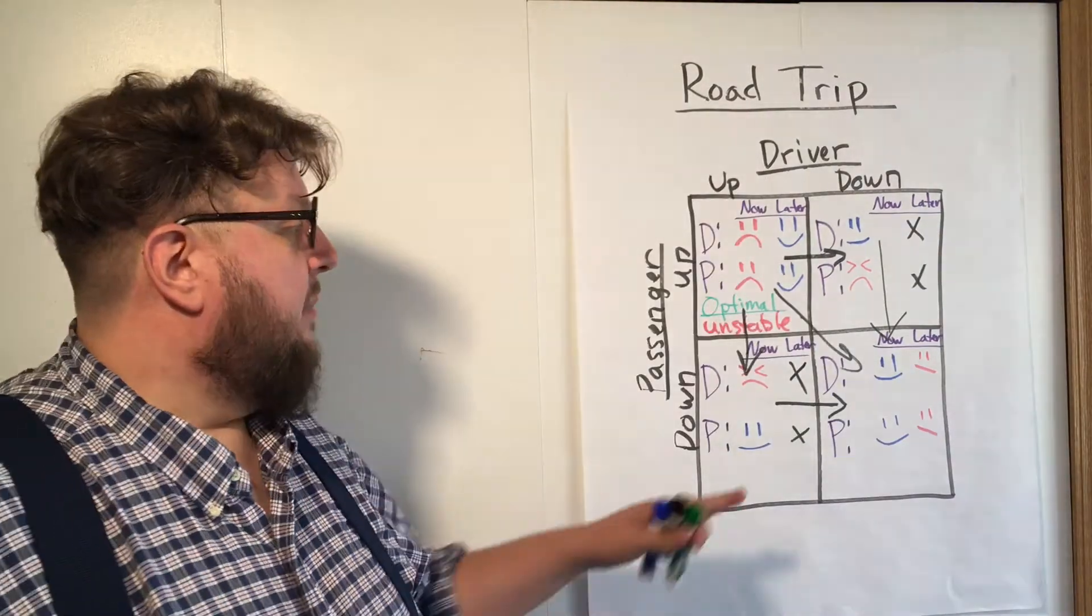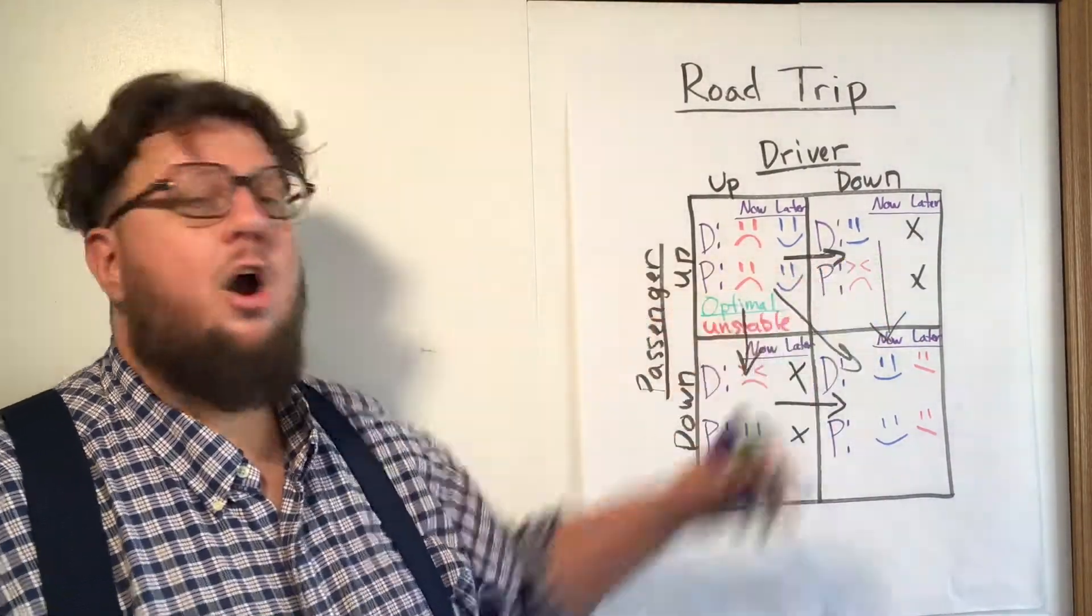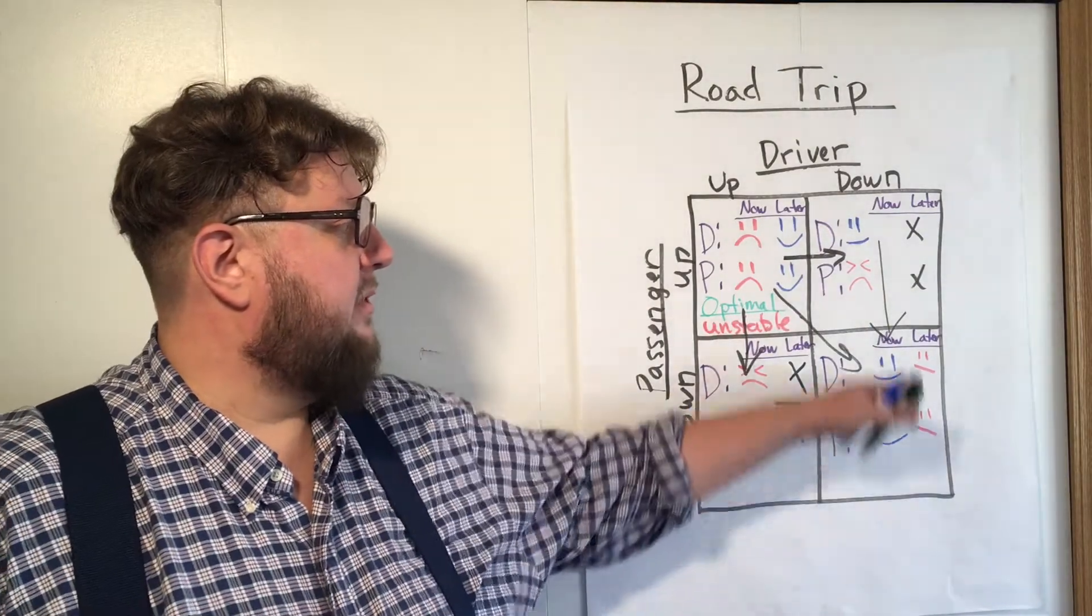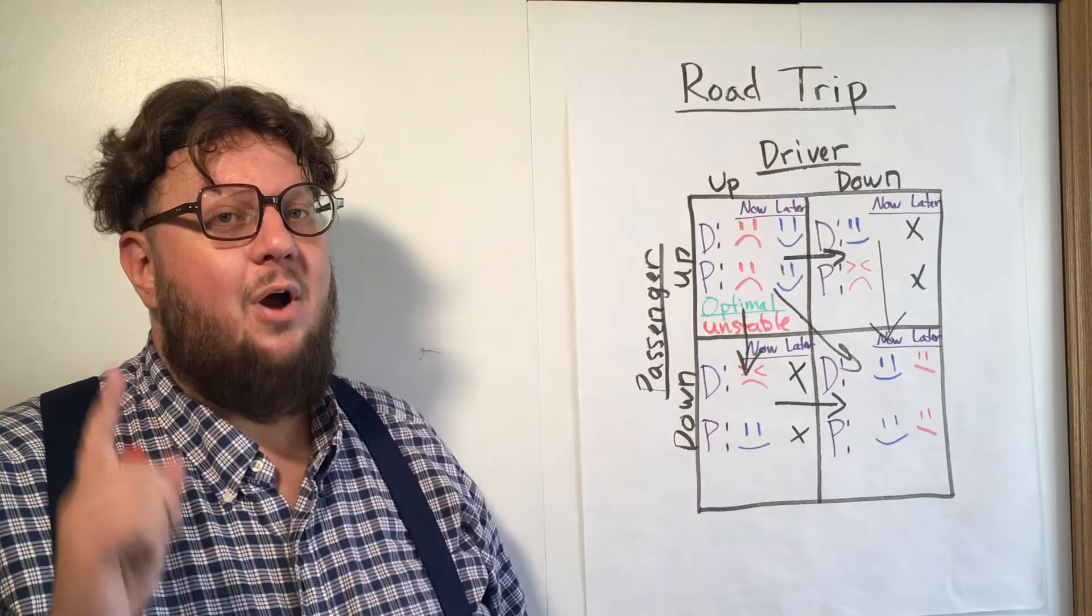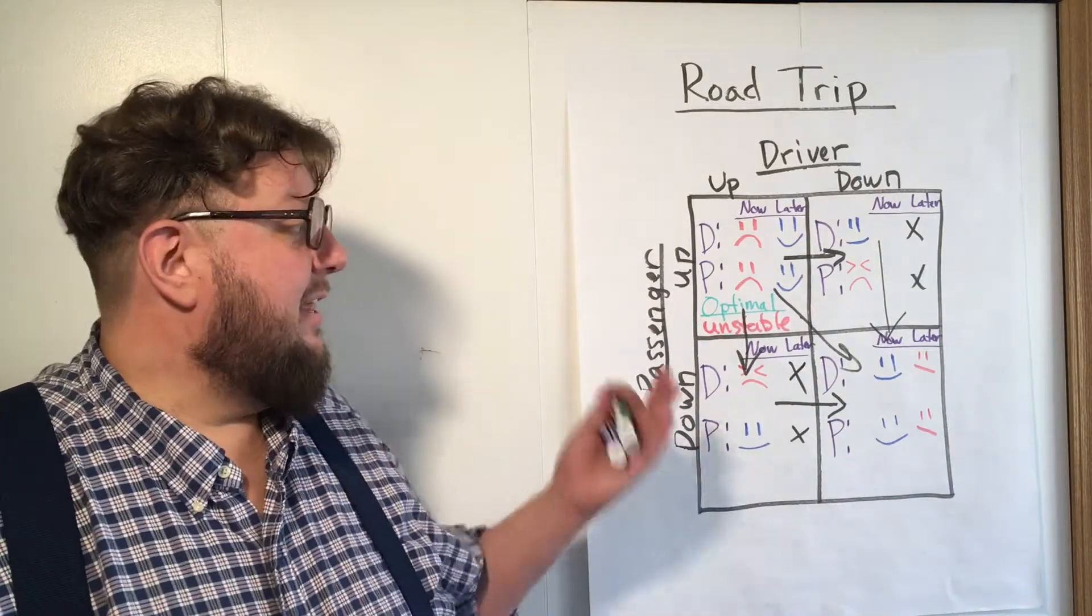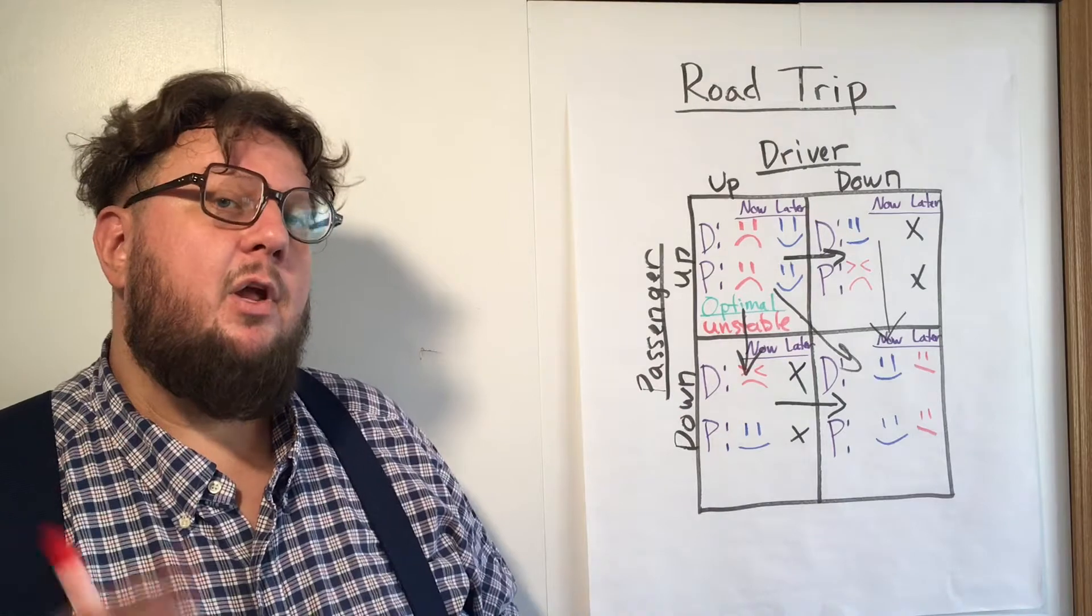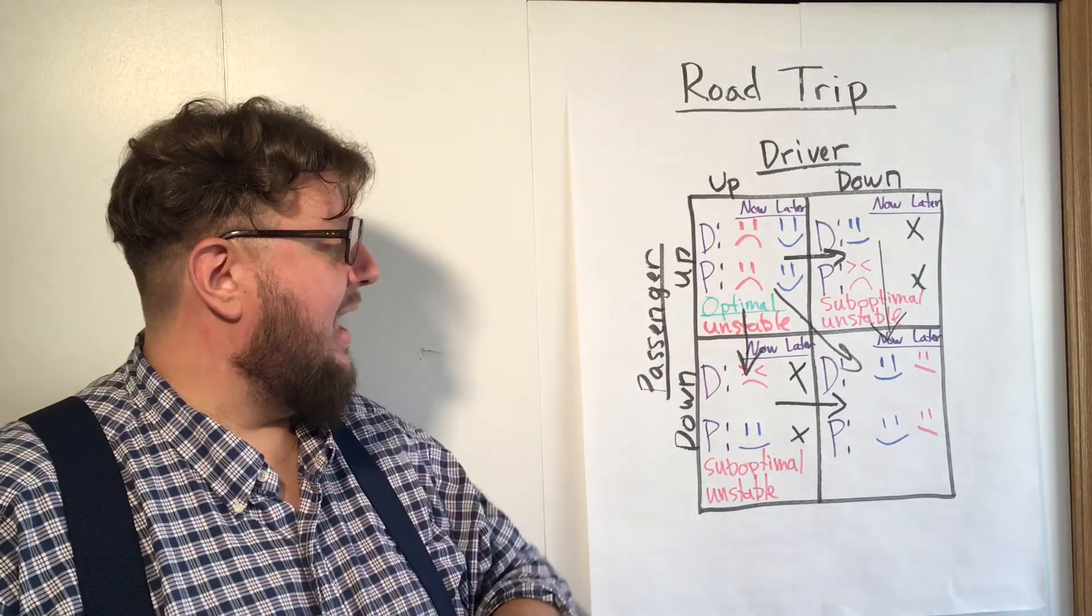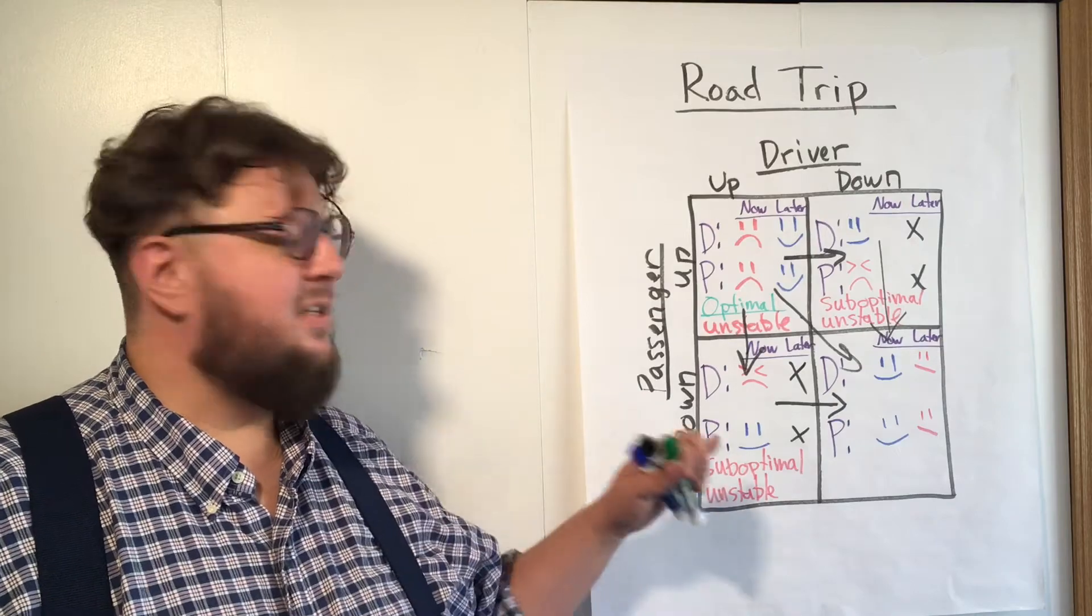We've already talked about this but the square here and the square here are also unstable because they're inherently going to push people to this final square down here. But they're also, are they optimal? Not for anybody, not for either player. So they're also suboptimal. I'm going to go ahead and write that in the squares. So there you have it, both of them are suboptimal and unstable.